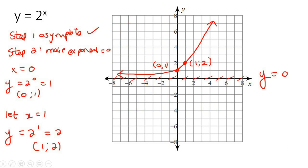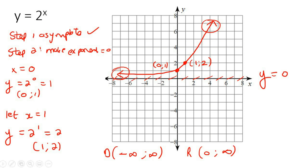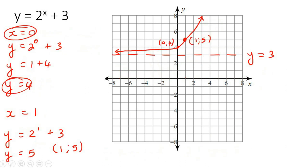So going back to previous examples: for the domain, it's always negative infinity to positive infinity for exponential functions — it always goes all the way left and all the way right. For the range of the second example, the lowest y value would be zero and the largest would be infinity. For the first example, the domain is negative infinity to positive infinity, and for the range, the lowest y value would be positive 3 and the highest can go up to infinity.